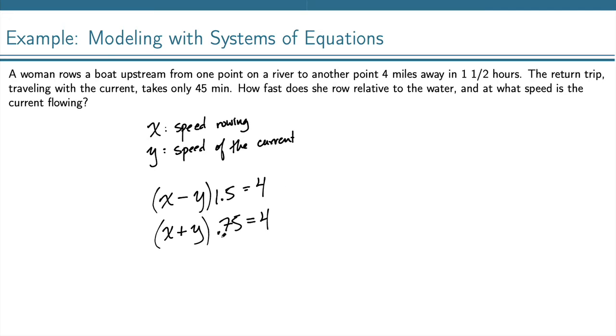Now we can solve this system of equations. I'm going to get rid of the decimals by writing them as fractions. 1.5 is 3 halves. And 0.75 is 3 fourths.